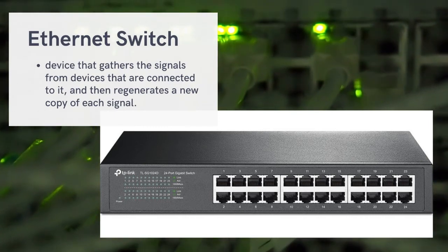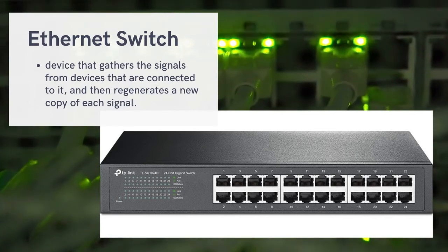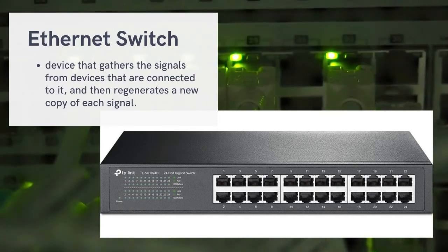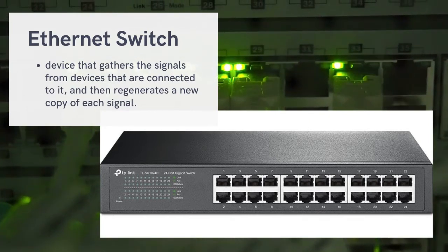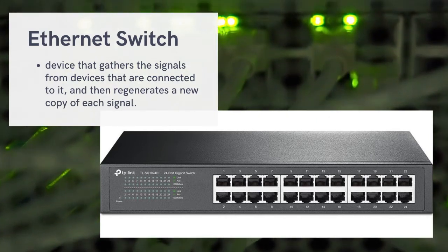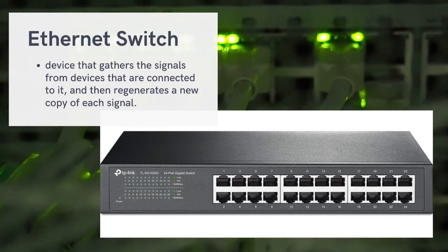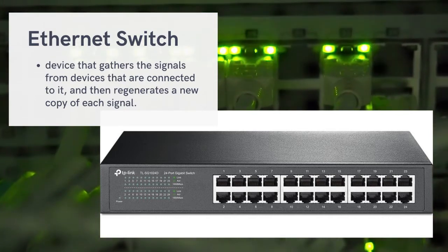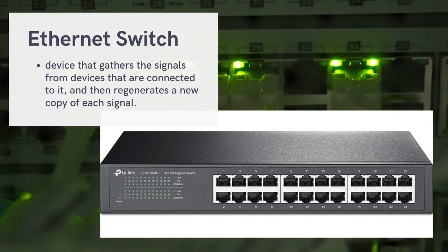For example, there are four computers — A, B, C, and D — connected through a switch. If Computer A wants to send data to Computer C, the data passes through the switch, which determines the correct route and delivers it specifically to Computer C. Computers B and D will not receive that data. This reduces network traffic, which is why the Ethernet switch is the most commonly used device.